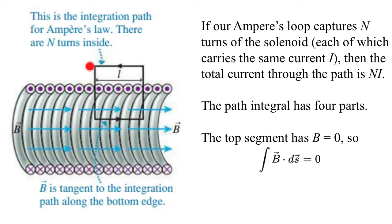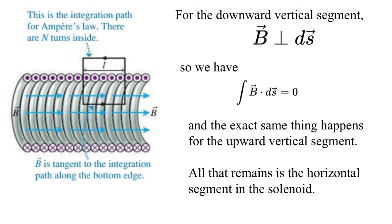Outside, it's much easier because all the current pierces the loop. The integral of B dot dS equals mu naught I becomes 2πr B equals mu naught I, or B equals mu naught I over 2πr. That 2π comes from the geometric path around the circular loop. Outside the wire, it looks just like an infinitely thin current — the field falls off as 1/r.